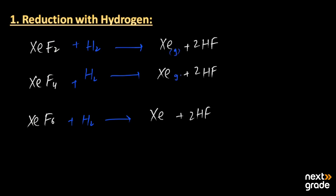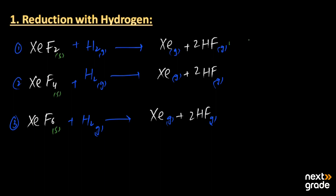The xenon produced is in the gaseous state. The hydrofluoric acid (HF) produced is also in the gaseous state. The hydrogen used is also in gaseous form. The xenon fluoride compounds used as reactants are all present in the solid state. This is the first chemical reaction — reduction with hydrogen.